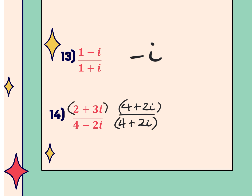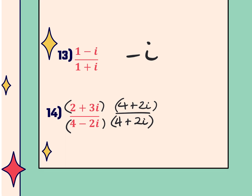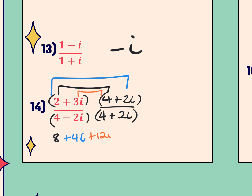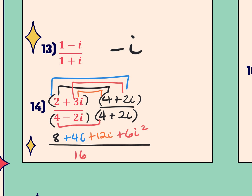The numerator needs to be FOILed. The shortcut for the denominator is just first and last — if you forget, just remember you're FOILing both the numerator and the denominator. Once I FOIL the numerator, 2 times 4 gives me 8. The outer gives me 4i, the inner gives me 12i, and last gives me positive 3i times positive 2i, which is positive 6i squared. For the denominator, first and last gives me 4 times 4 is 16, and negative 2i times positive 2i is negative 4i squared.